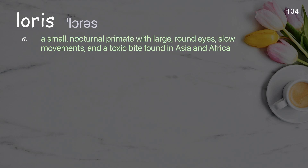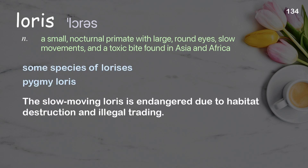Loris: a small, nocturnal primate with large, round eyes, slow movements, and a toxic bite found in Asia and Africa. Examples: some species of lorises, pygmy loris. The slow-moving loris is endangered due to habitat destruction and illegal trading.